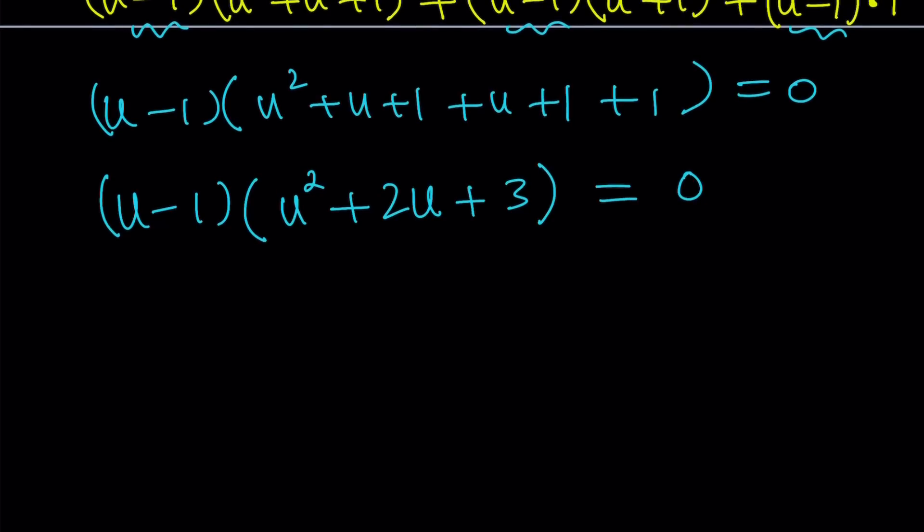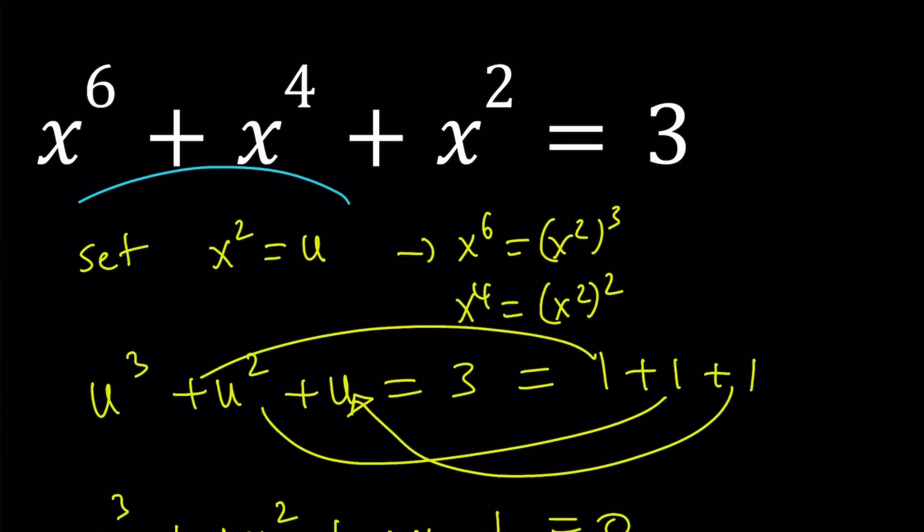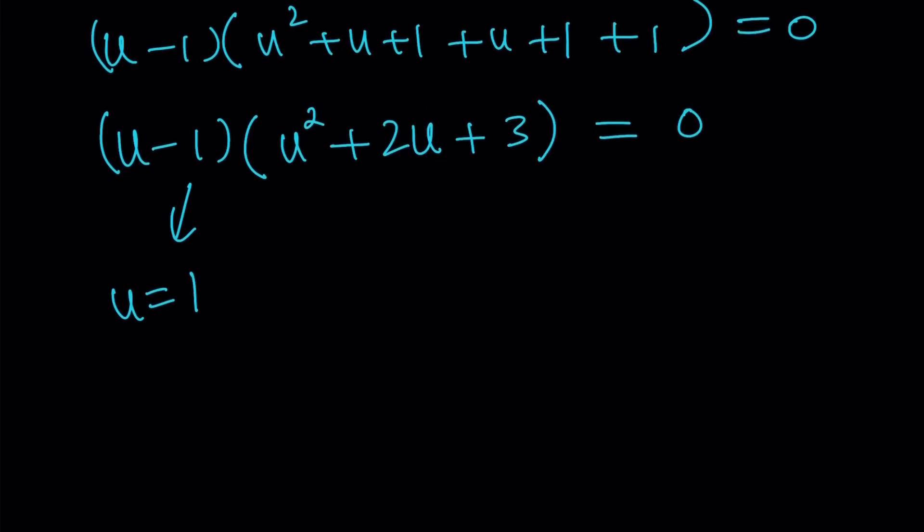So now, u equals 1 is the trivial solution. What does that mean? What is u? u is x squared. So we're going to set this equal to x squared. And that gives us two solutions. Easy, right? x equals 1 and x equals negative 1. Those are the real solutions. What about the other ones? Let's take a look.